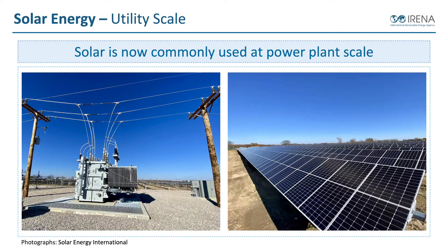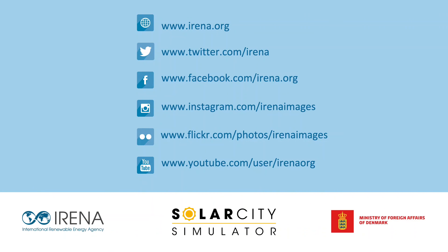We're also seeing large utility-scale solar power plants becoming very common. As solar becomes more cost effective, utilities and investors alike are deploying solar power plants all over the world and diving in to produce, own, and operate them. These are quickly becoming some of the cheapest prices of delivered electricity anywhere on the planet. It's amazing to see the cost of solar coming down and applications ranging from very small to gigantic solar power plants. At the end of each lesson, there are additional resources available if you want to continue researching and learning more about solar energy.